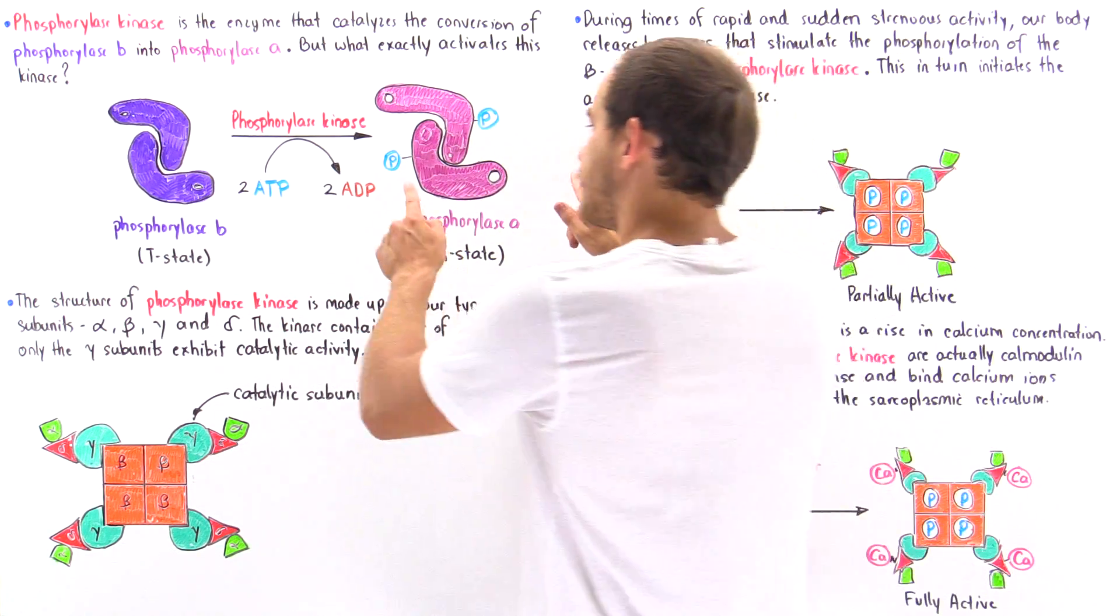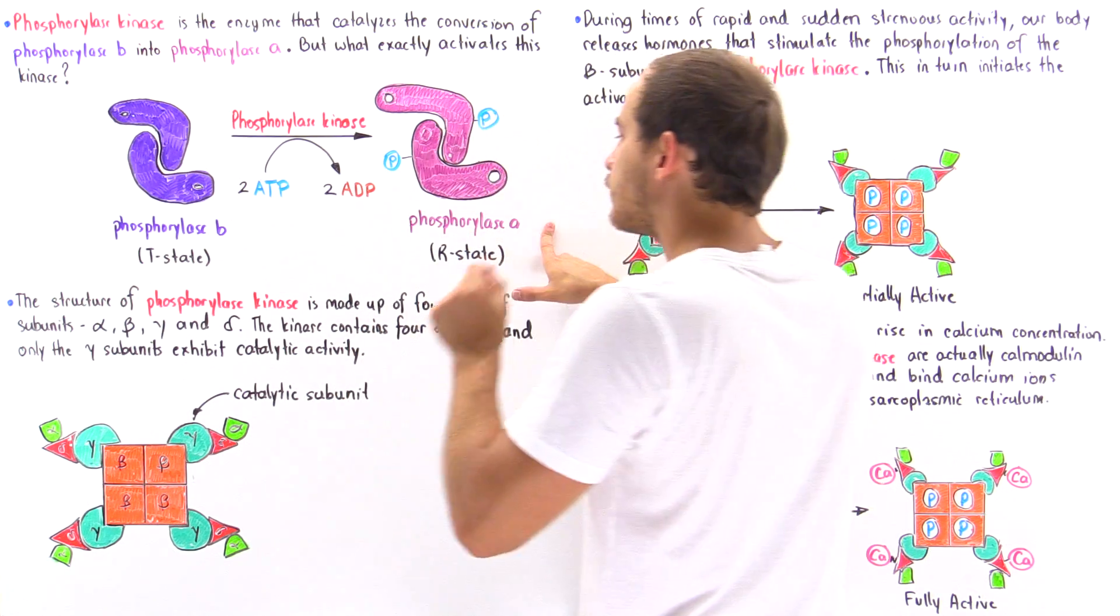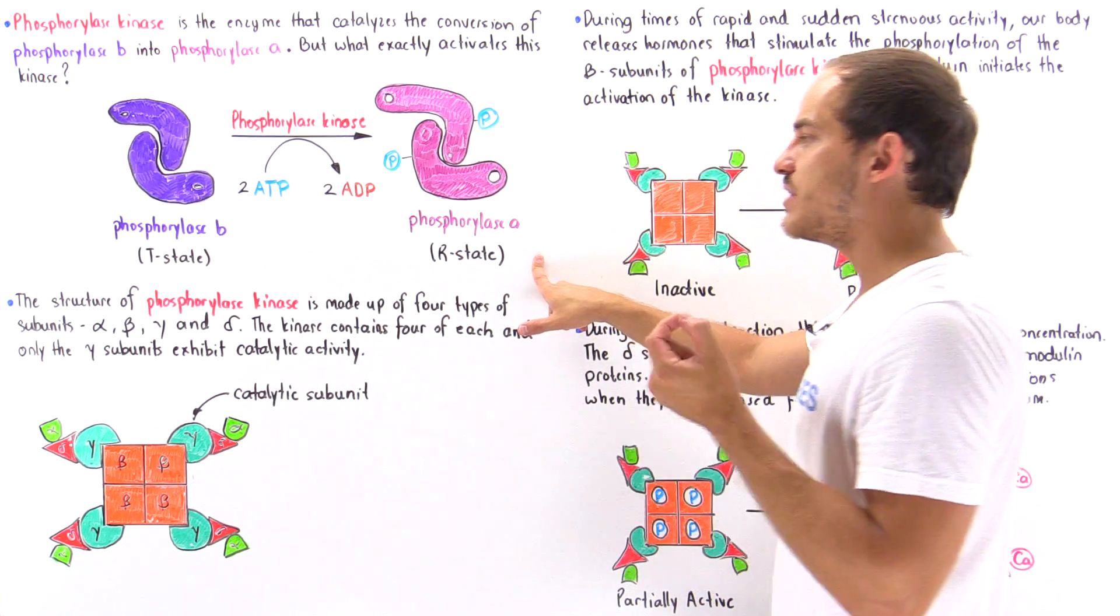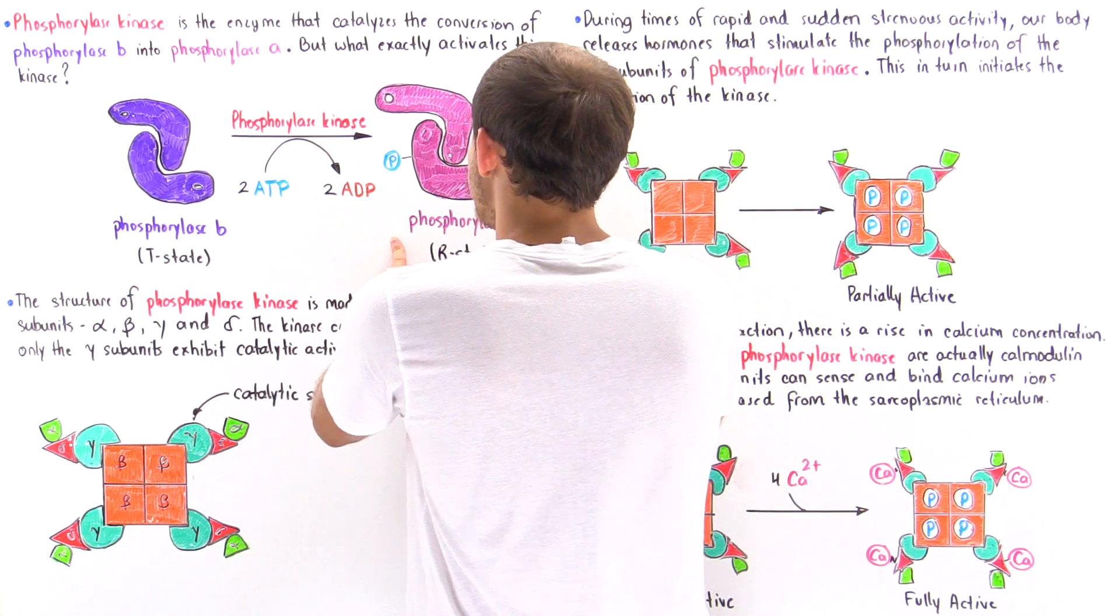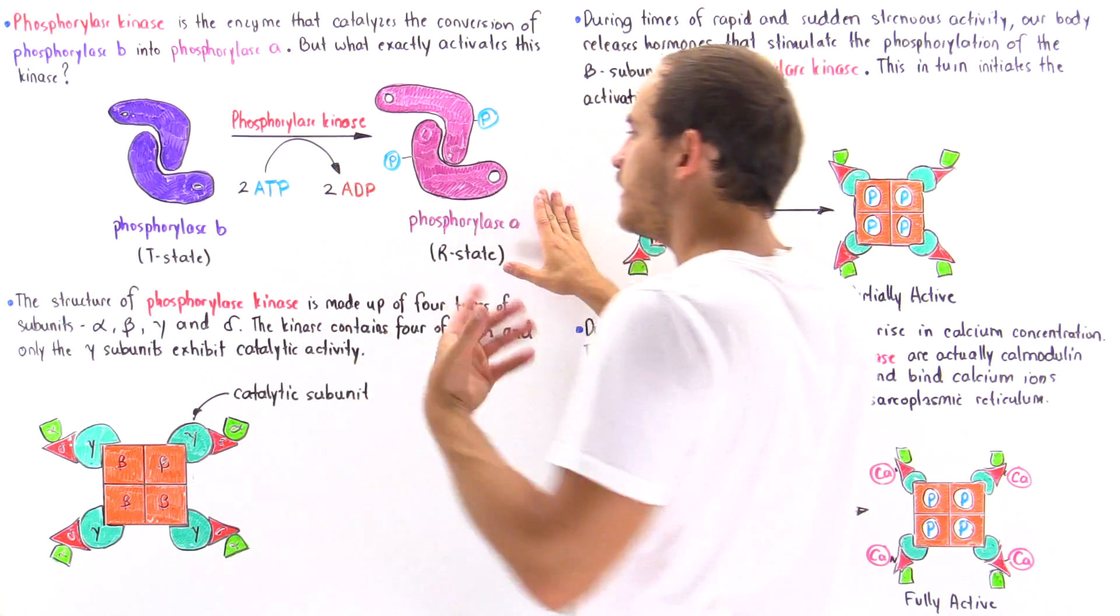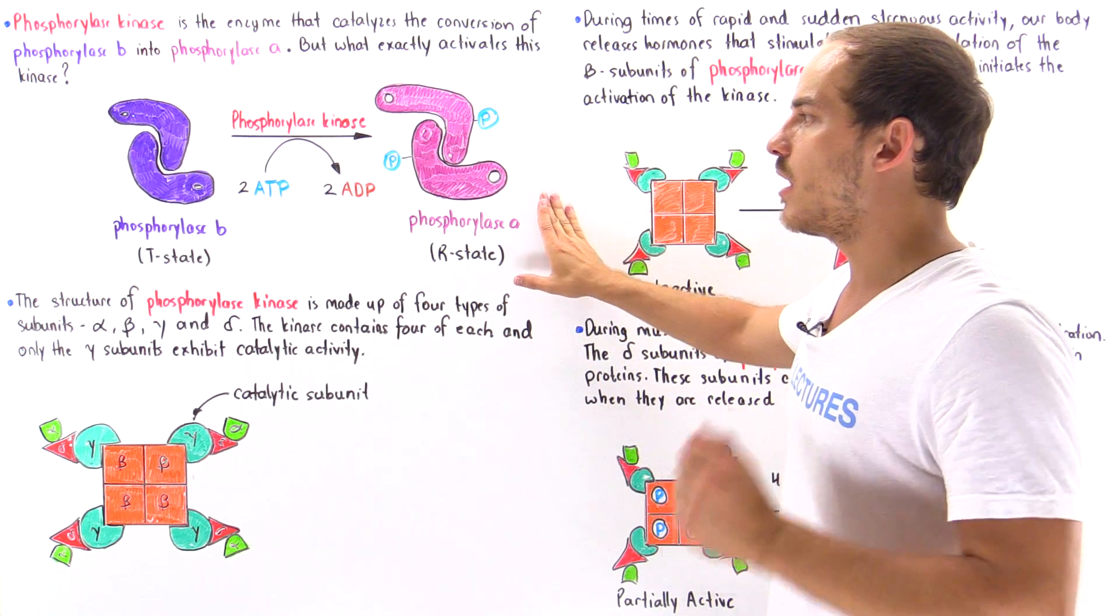And that's because it's phosphorylase A that predominates in the R state, the relaxed state, that is fully active. And once we form phosphorylase A, this enzyme basically initiates step one of glycogen breakdown.